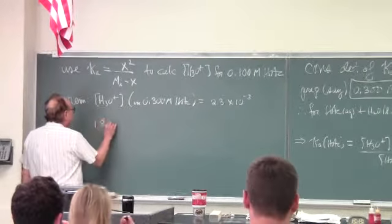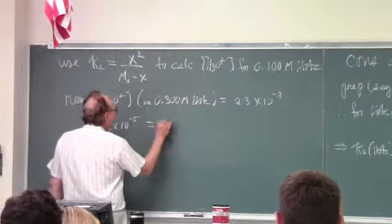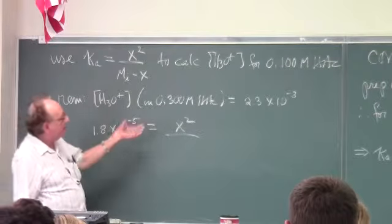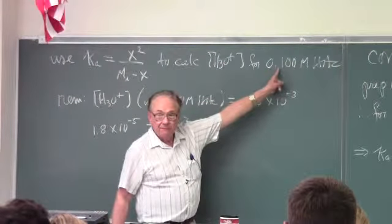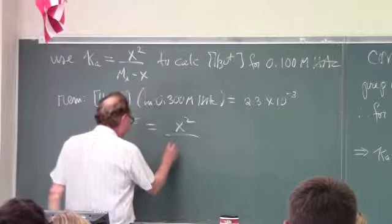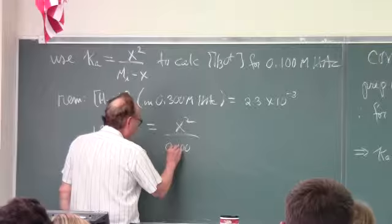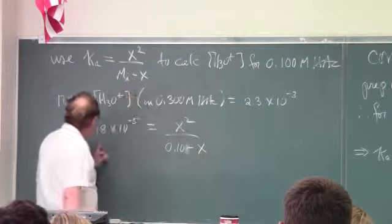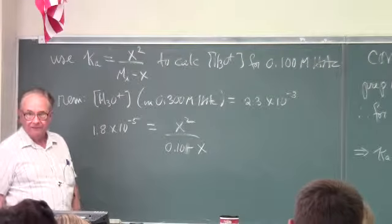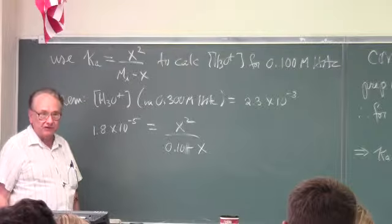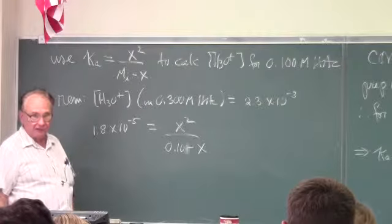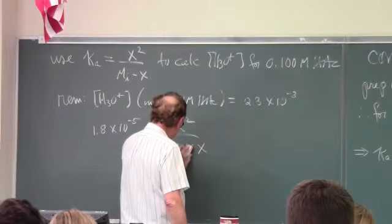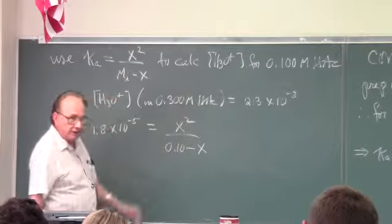Ka is 1.8 times 10 to the minus five. X squared represents the hydronium ion molarity times the acetate ion molarity. Now for my tenth molar to three sig figs acetic acid solution. I'm going to change it to two sig figs because this Ka value is only two sig figs. I can't wind up with a hydronium ion concentration known beyond two sig figs. So I'm going to do this right now.